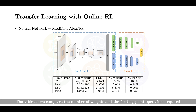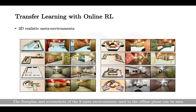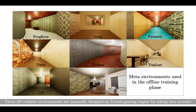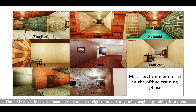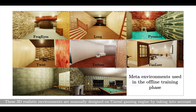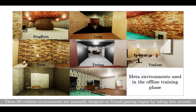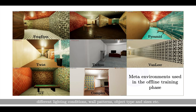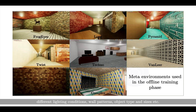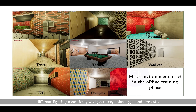The table above compares the number of weights and the floating-point operations required. The flow plan and screenshots of the eight meta environments used in the offline phase can be seen. These 3D realistic environments are manually designed on Unreal Gaming Engine by taking into account different lighting conditions, wall patterns, object type and sizes, etc.